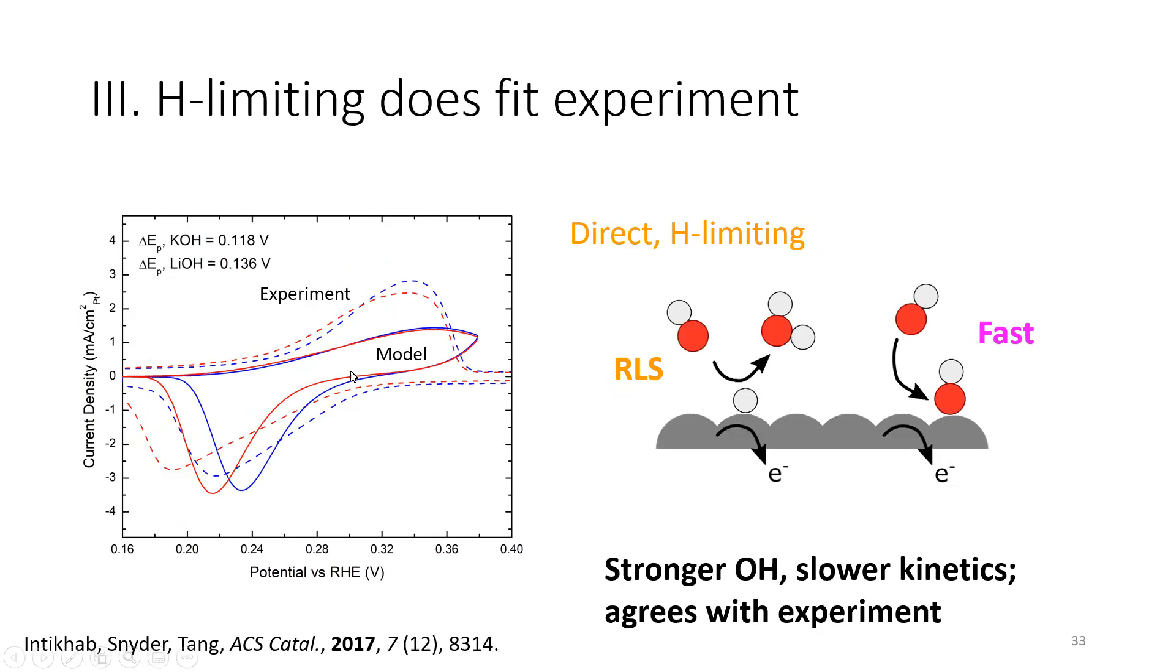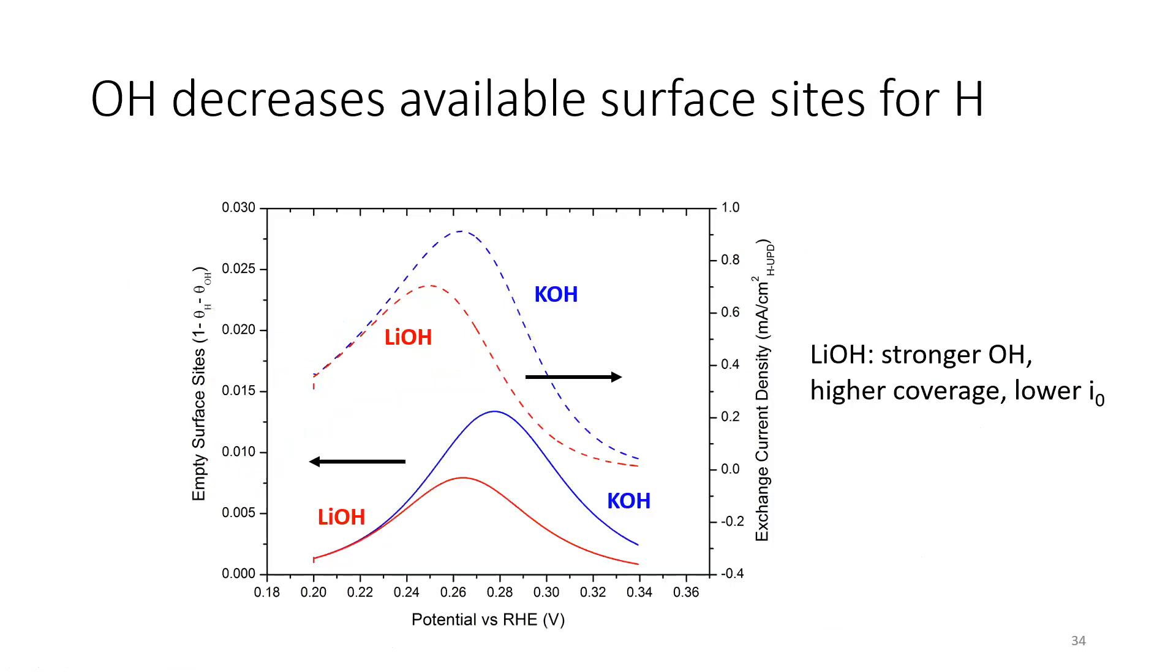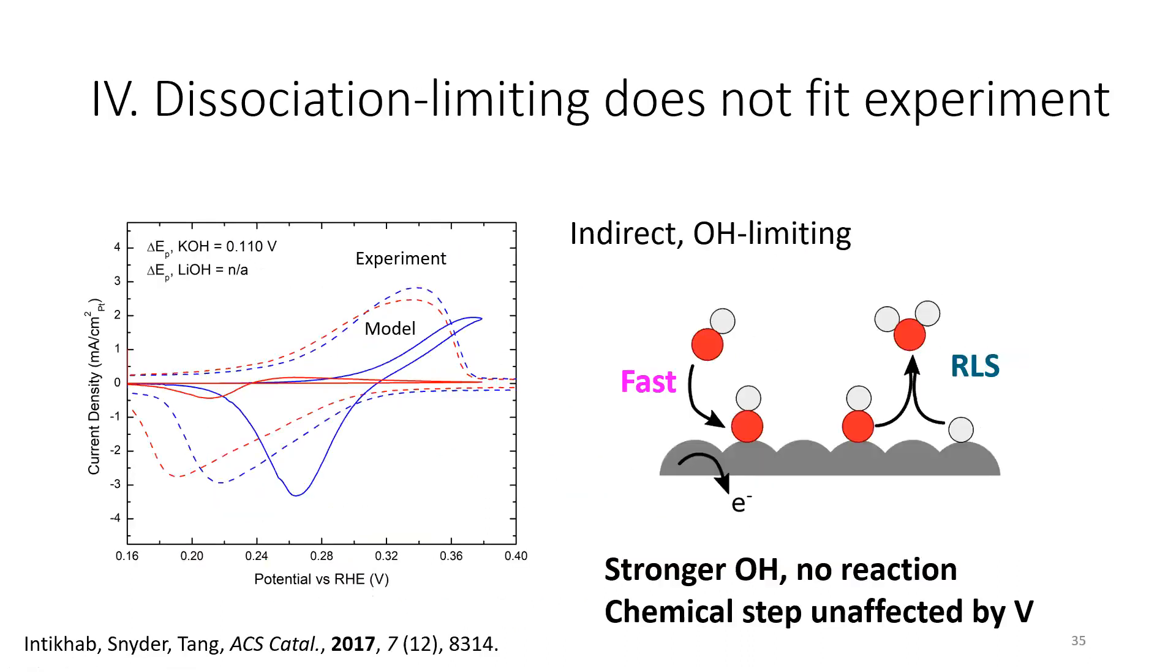The model also picks up some of these subtleties like the asymmetry in the peaks. The reason for this is actually pretty straightforward. If we have stronger OH binding, we're going to have fewer empty sites. If we have fewer empty sites, then the exchange current density is lower, and that's why stronger OH is making the kinetics slower for this reaction. It makes sense when you think about it, but you have to go into the details to see why. And then just for the sake of completeness, let's look at the dissociation limiting case. Here, our model looks completely crazy compared to the experiment. It doesn't match at all, and the reason for that is that if this OH and H dissociation step is limiting, this is not an electrochemical step. This is purely chemical. That means that the voltammetry is very, very different because it's not affected by voltage in the way that standard electrochemical reactions are.